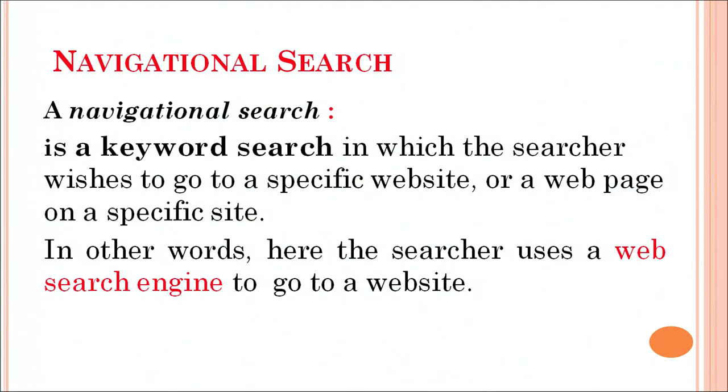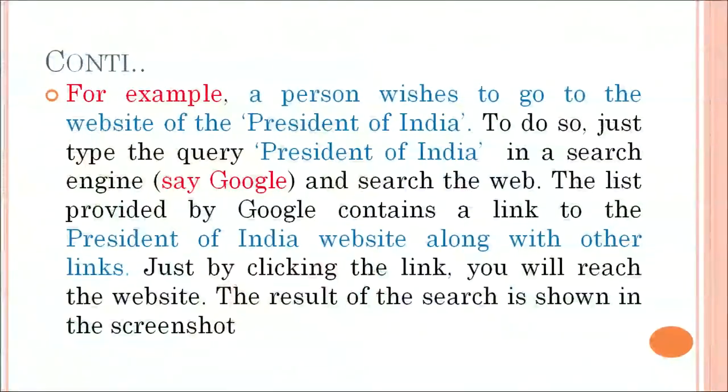In navigational search, a searcher uses a web search engine to go to a website. For example, a person wishes to go to the website of the President of India. To do so, just type the query 'president of India' within quotes in a search engine, say Google, and search on the web. The list provided by Google contains a link to the President of India website along with other links. Just by clicking the link, you will reach the website. The results are shown in our next screenshot.